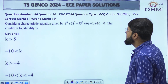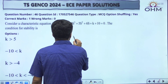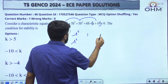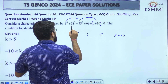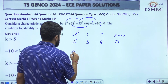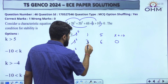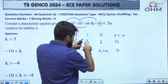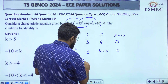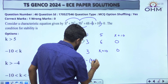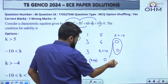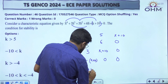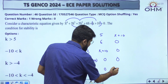Next: Routh-Hurwitz criteria based. Consider the characteristic equation — a fourth-order equation is given. What is the condition for stability? I start making the Routh-Hurwitz array. S⁴ row: 1, 5, K+10. S³ row: 3, 6, 0. S² row: (3×5 − 6)/3 = 9/3 = 3, and (3×(K+10) − 0)/3 = K+10. S¹ row: (3×6 − 3×(K+10))/3 = 6 minus (K+10). S⁰ row: K+10.